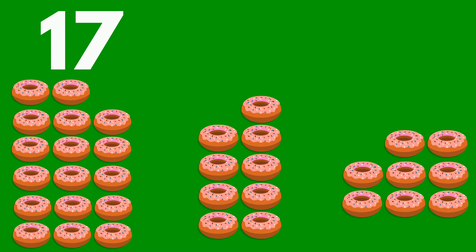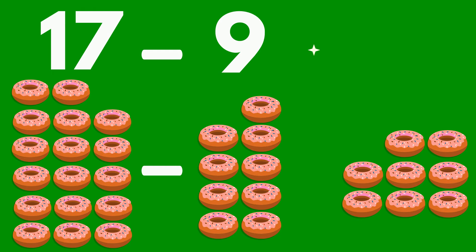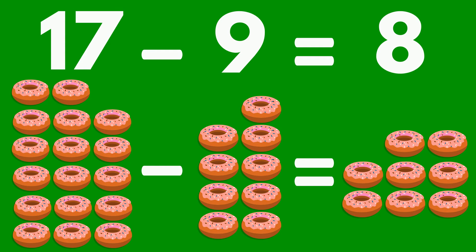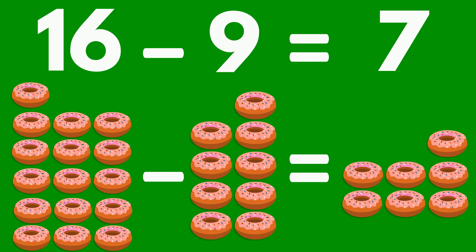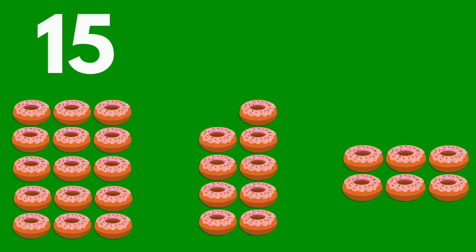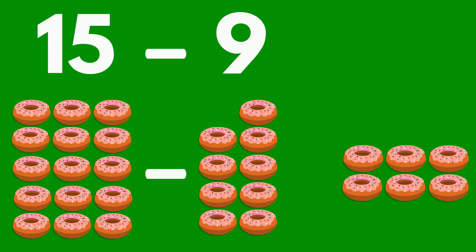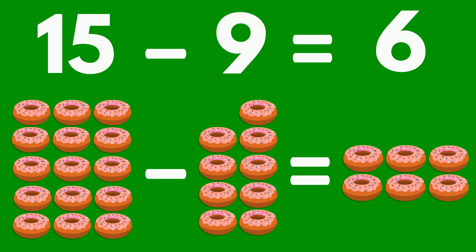17 doughnuts minus 9 doughnuts equals 8 doughnuts. 16 doughnuts minus 9 doughnuts equals 7 doughnuts. 15 doughnuts minus 9 doughnuts equals 6 doughnuts.